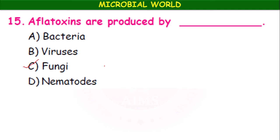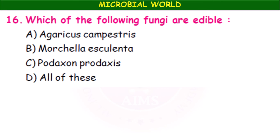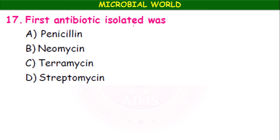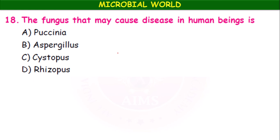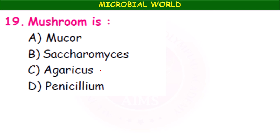Which of the following fungi are edible? Agaricus campestris, Morchella, Ascobolus, Polyporus — all of these are edible fungi. Edible means eatable — mushroom curry! The first antibiotic isolated was penicillin, neomycin, tetromycin, or streptomycin? Penicillin is the first antibiotic. The fungus that may cause disease in human beings is Aspergillus. Recently we are calling it black fungus — it is Aspergillus.